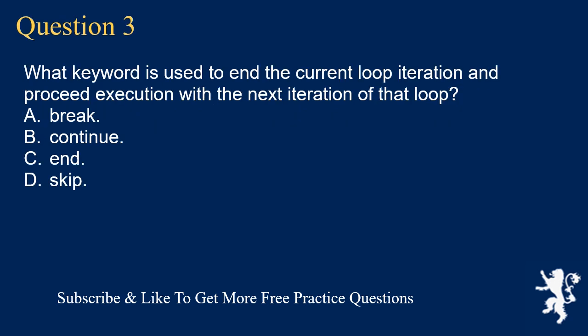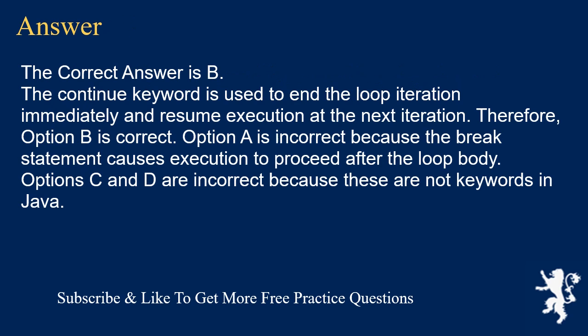Question 3. What keyword is used to end the current loop iteration and proceed execution with the next iteration of that loop? A. Break. B. Continue. C. End. D. Skip. The correct answer is B. The continue keyword is used to end the loop iteration immediately and resume execution at the next iteration. Option A is incorrect because the break statement causes execution to proceed after the loop body. Options C and D are incorrect because these are not keywords in Java.